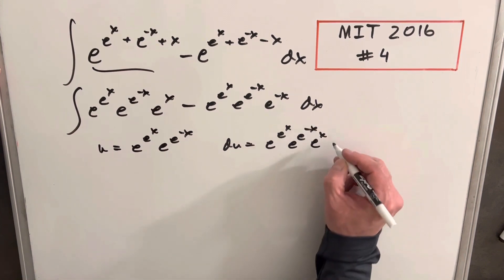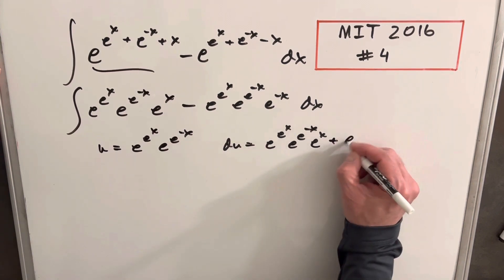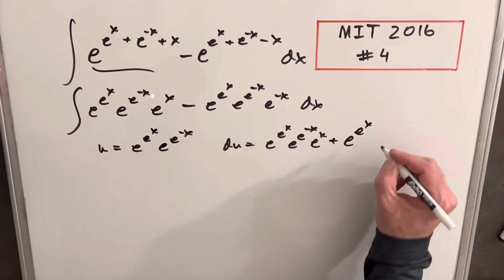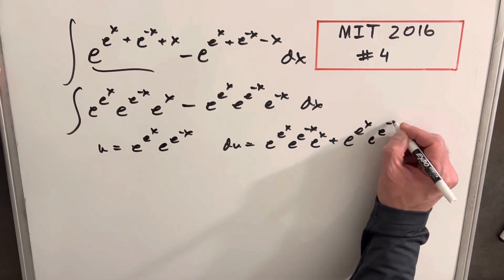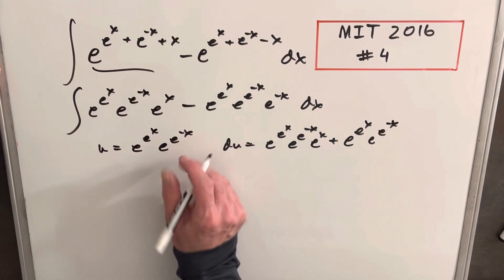Then we're just going to keep our first term, e to the e to the x, differentiate this term. We have e to the e to the negative x, but then we need the chain rule again. So we're getting the derivative of, so now we need the derivative of just this piece right here.